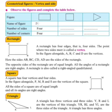The first figure is a rectangle. How many sides are there in a rectangle? Four. And how many corners? Again four. Now what is the second figure? It is a square. How many sides does a square have? There are four sides — let us count: one, two, three, and four.